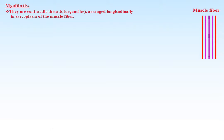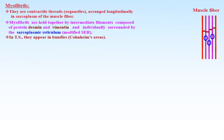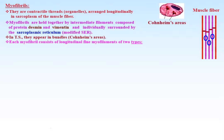Myofibrils are contractile thread organelles arranged longitudinally in the sarcoplasm of the muscle fibers. The myofibrils are held together by intermediate filaments composed of protein desmin, and each myofibril is surrounded by sarcoplasmic reticulum, which is a modified smooth endoplasmic reticulum. Myofibrils are grouped together in bundles; in transverse sections these bundles are called Cohnheim areas.